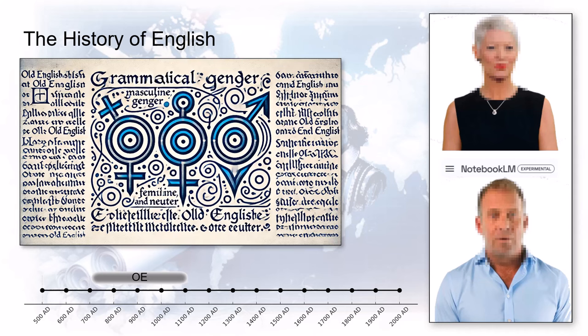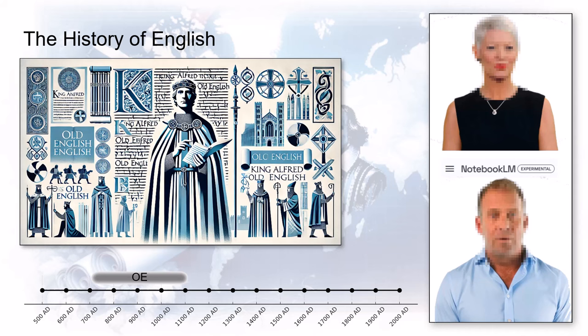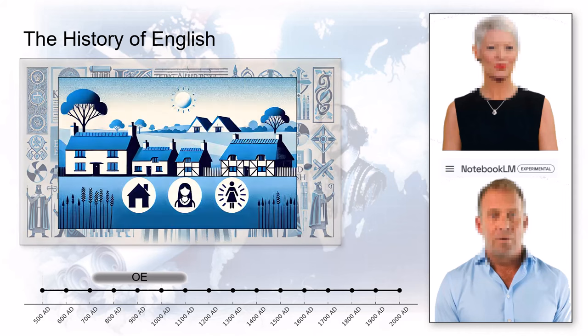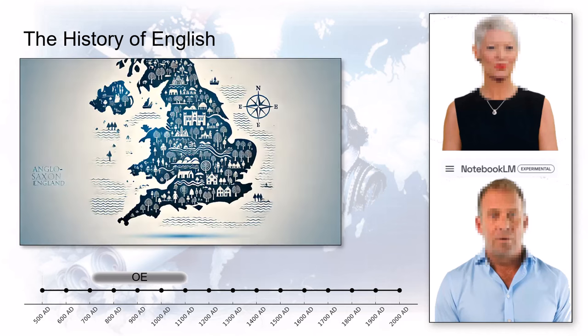We still use tons of those Old English words today. Think about it: house, woman, day — those are pure Old English. Even place names like London and York have roots going way back to those times. It's like our language has these secret messages hidden inside, and if you know the code, history comes alive.